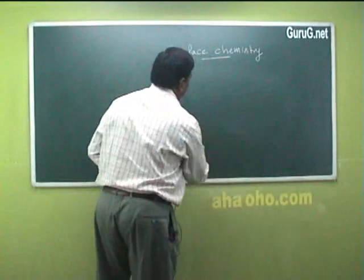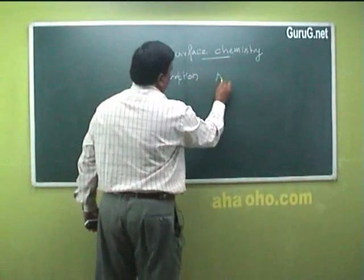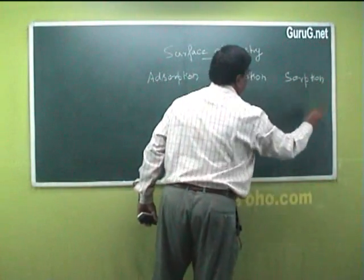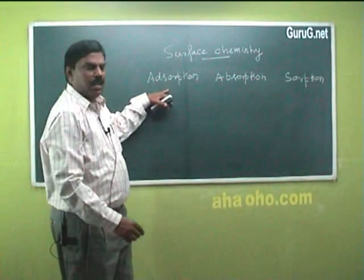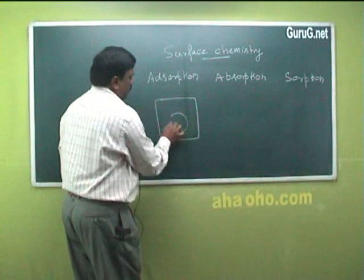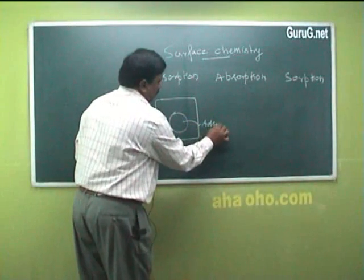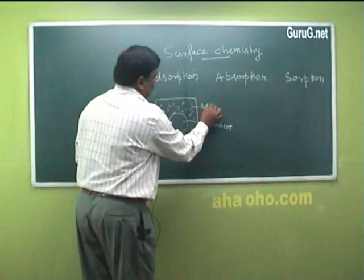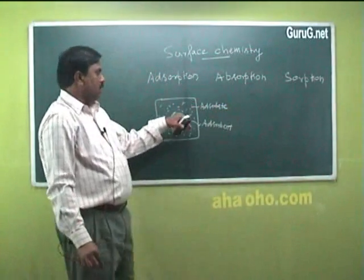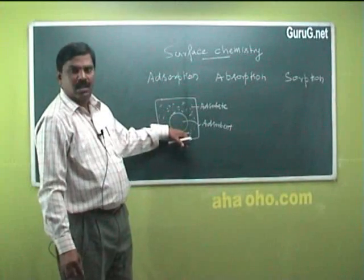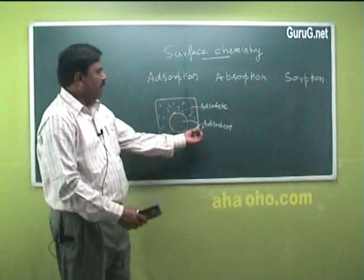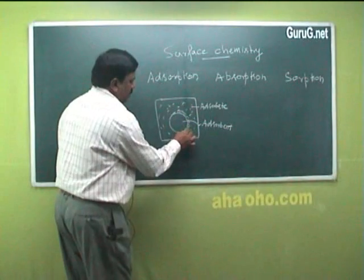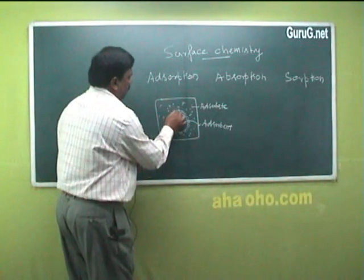There are three types of processes: one is adsorption, another is absorption, and another is sorption. Adsorption is a surface phenomenon — the surface of the adsorbent attracts the adsorbate molecules, which form a layer above the adsorbent. This type of process is called adsorption.